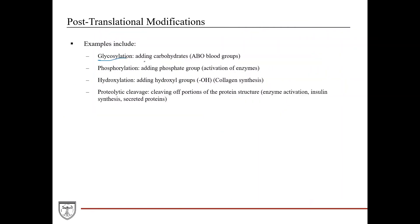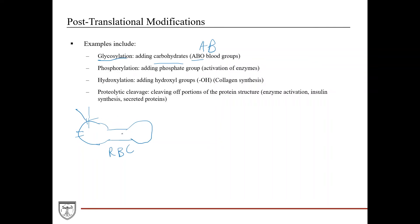Some examples of post-translational modifications: glycosylation is adding carbohydrates, and it's important for the ABO blood groups. Red blood cells have proteins embedded in their membrane that get glycosylated with different types of sugars. This is how you distinguish A type from B type, AB type, and O type — it's very important for recognition by the immune system and ensuring the proper blood type is given.